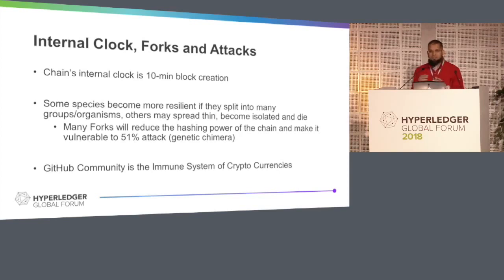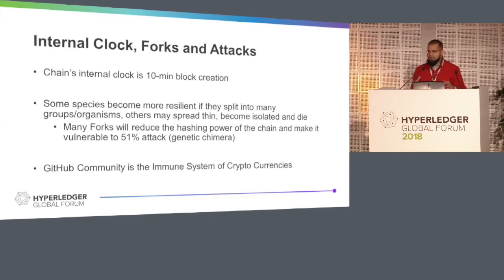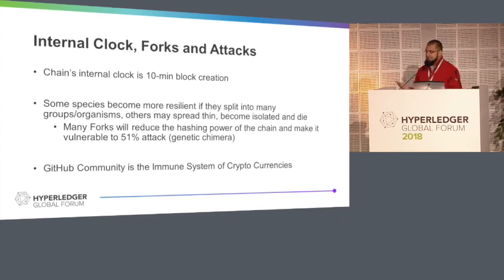Some species, when they divide into groups, have a better chance of survival. For example, Darwin's finches — they have different kinds of beaks, so 10 different finches have 10 different kinds of beaks, and that makes them good for survival. Other species might go isolated, spread thin, and die. For example, if we have a Bitcoin or chain network and we divide it into 10 forks, every single chain will get one-tenth of the hashing power and they are vulnerable to attacks. This is the concept of genetic drift that we have in biology as well.